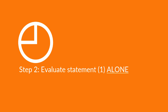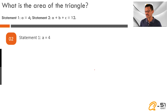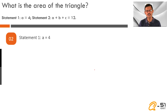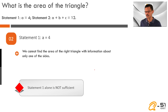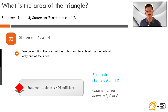Let's dive into statement 1. Statement 1 says A is equal to 4 — one of the three sides. This is grossly inadequate. The other two sides could be any two numbers, and for each of those the area of the triangle could be completely different. So with statement 1, we will not be able to find the area of the triangle, let alone finding a unique value. Statement 1 alone is not sufficient. We eliminate choices A and D, and we're left with only B, C, or E.